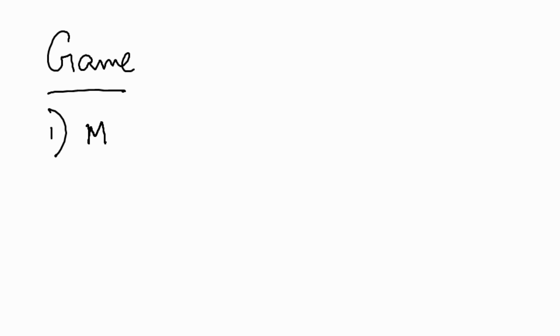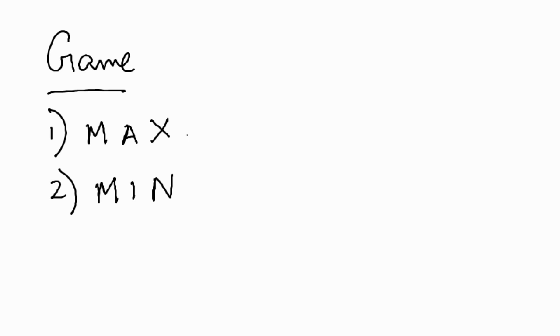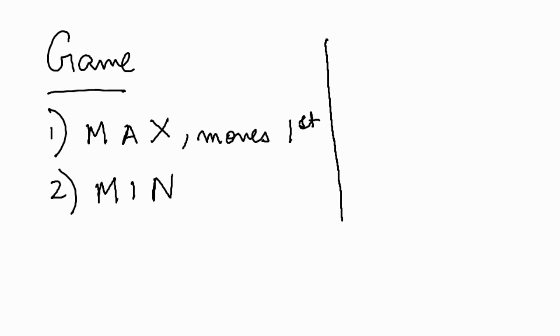Consider a game of two players. Let the first player be Max and the second player be Min. In the game, assume that Max makes the first move and after that the players move alternatively, taking turns.